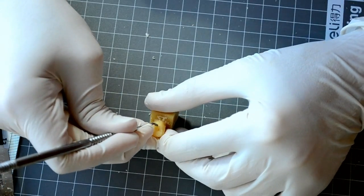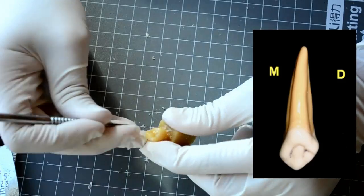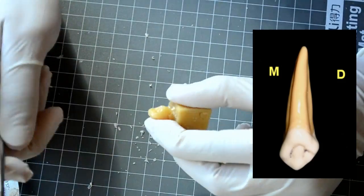Use the spoon end of the Lecron carver to carve out the mesial and distal lingual foci and marginal ridges. Make sure the ridges are higher than the foci.